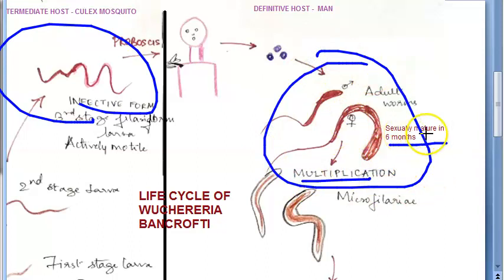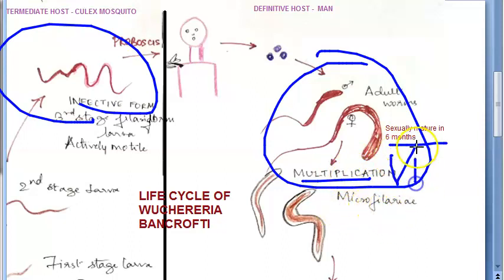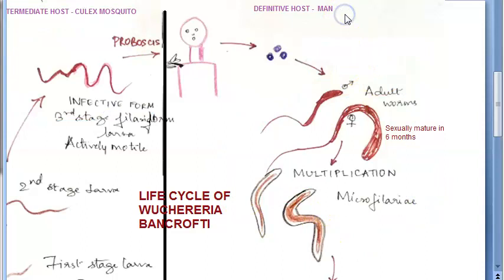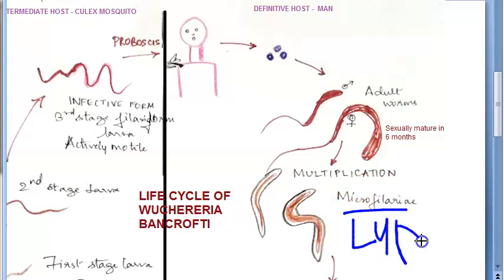In the lymph node, the third stage filariform larva will become adult worms. They will sexually mature in six months and start multiplying. For six months you don't know — it is developing into adult worms. Once they start multiplying, these are viviparous. They are going to lay microfilariae — no eggs here, please pay attention. It is going to lay what is called microfilariae, which will be present in the lymph.